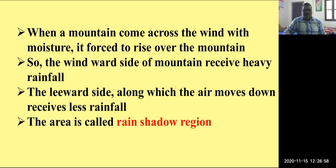How does this rainfall occur? When a mountain comes across the wind which consists of moisture, it forces the wind to rise over the mountain. The wind tries to cross the mountain, so the windward side of the mountain receives heavy rainfall. When the wind tries to cross the mountain, the air rises up. Due to the normal lapse rate, the temperature at higher altitudes will be lower, so the air cools down, condensation takes place, and the clouds burst in the form of rain. So one side of the mountain receives heavy rainfall.